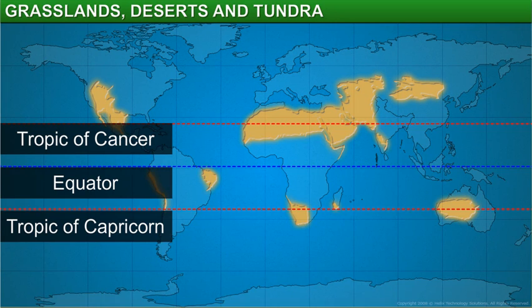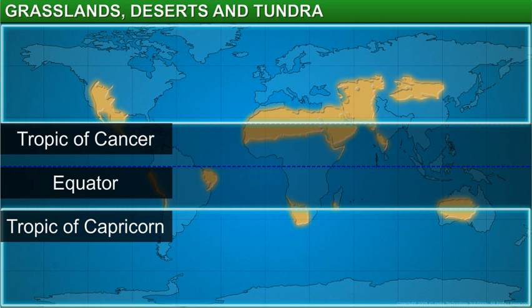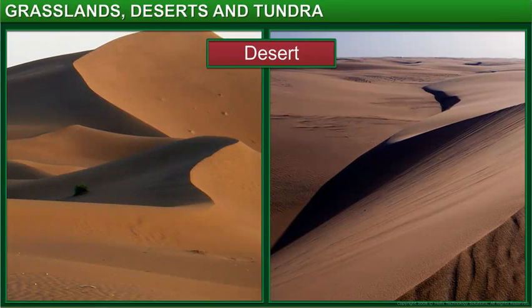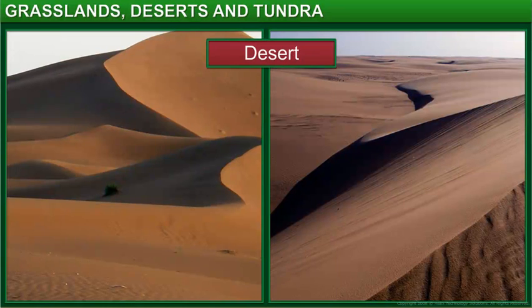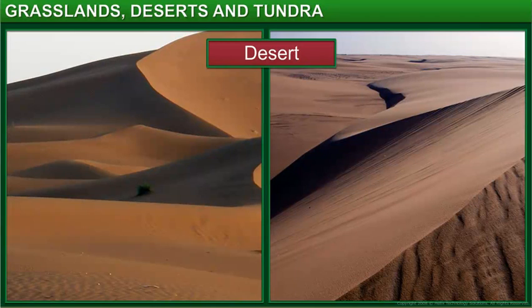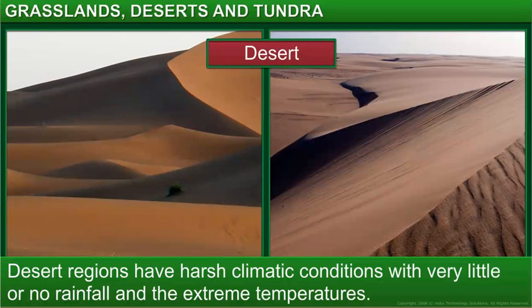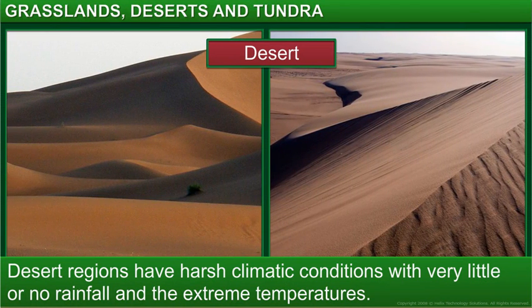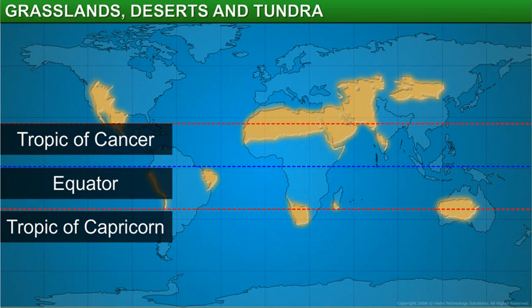Now let's look at the lands that lie to the north of the Tropic of Cancer and to the south of the Tropic of Capricorn. Most of these lands are covered by deserts. Desert regions have harsh climatic conditions with very little or no rainfall and extreme temperatures. About one-fifth of the Earth's land area is covered with deserts.